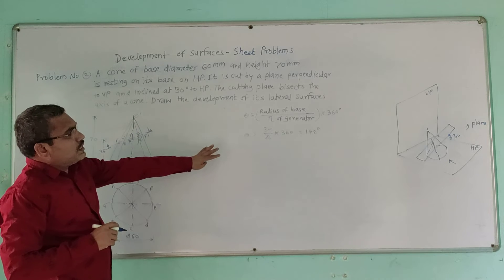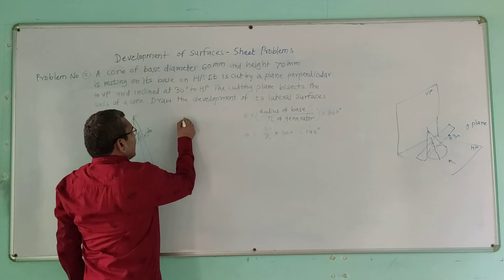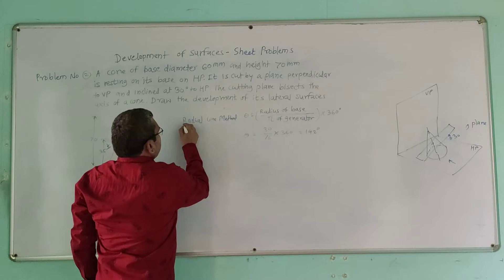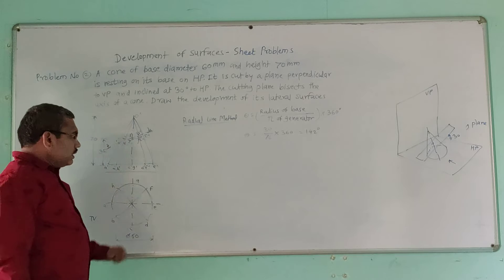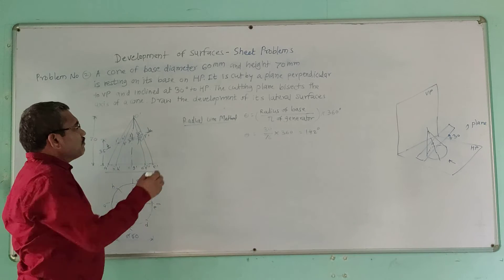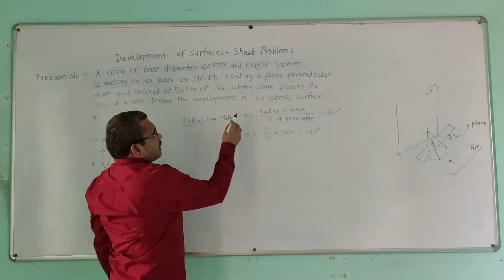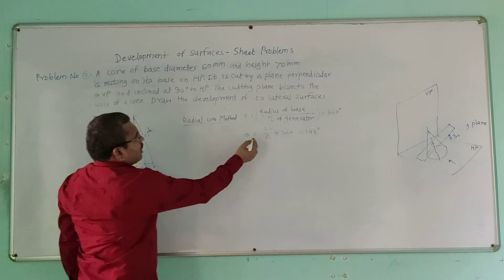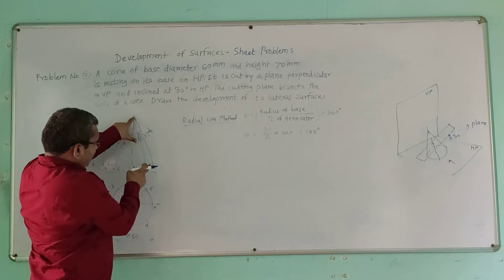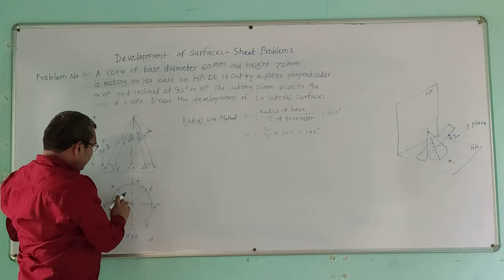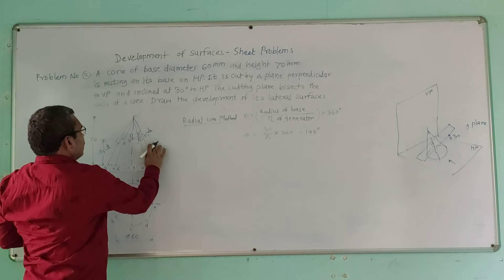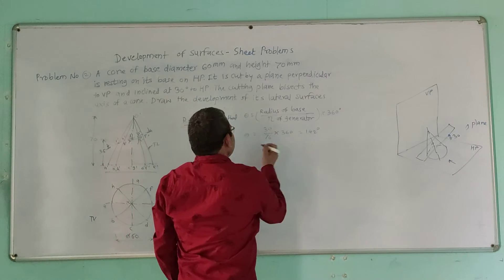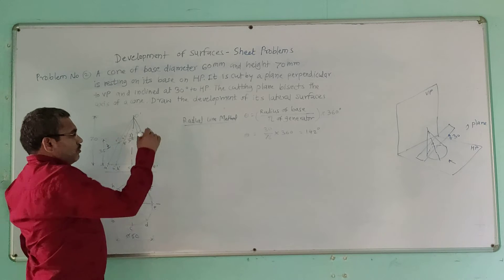Next, draw the development of this cone using the radial line development method. For the cone, calculate the included angle theta using the formula: theta = (radius of base / true length of generator) × 360. The radius of base is 30 mm. Measure the true length OE from the top view, which is parallel and shows true length. Using OE measured as 76 mm, theta = (30/76) × 360 = 142 degrees.